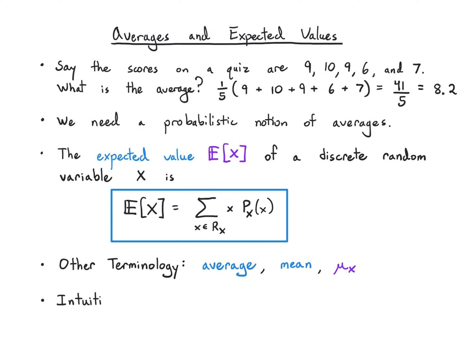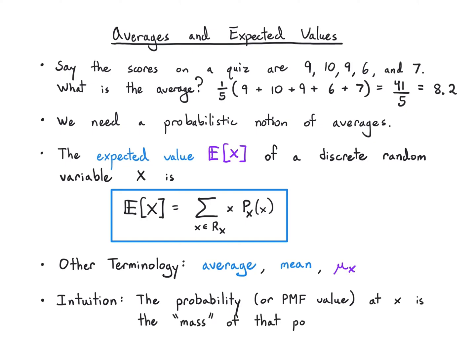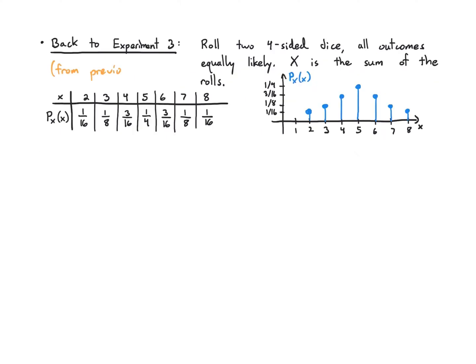For physical intuition: you can think of the PMF value at x as the mass of that point, and the expected value is the center of mass of the entire object. So we have an object with discrete point masses whose masses are given by their probability values, and the center of mass is the average. Let's do an example — rolling two four-sided dice where all outcomes are equally likely. We computed the PMF for the sum of the rolls, going from 2 up to 8, with a symmetric-looking PMF centered at 5.